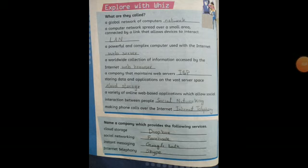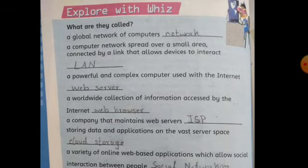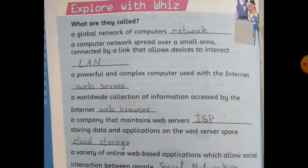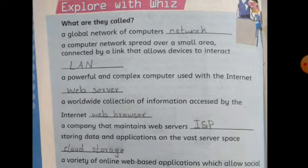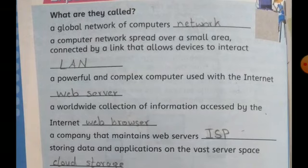This is on page number 66. A global network of computers is called — so what is called network? Now we have learned everything; after it I will give you an overview of all. A community network spread over a small area, connected by a link that allows devices to interact with each other, is called a LAN.